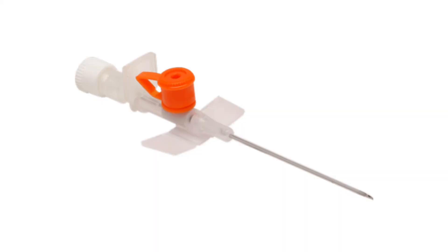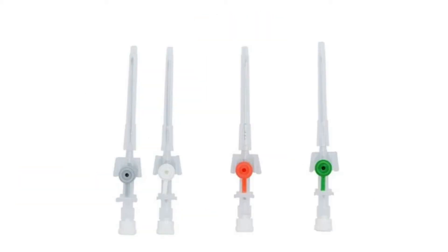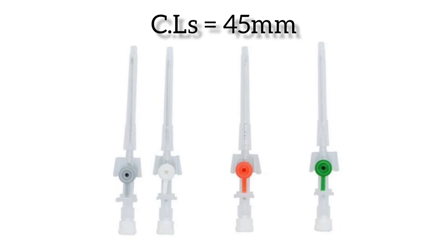The orange colored cannula has the lowest gauge number, which is 14, with the maximum external diameter and highest flow rate. The external diameter is 2.1 mm and the flow rate is 270 ml per minute. The catheter length of all these emergency cannulas is the same, that is 45 mm.